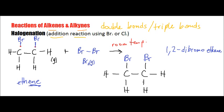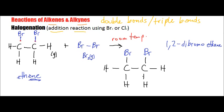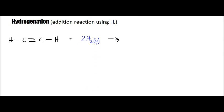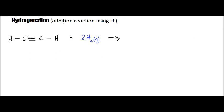Looking at a different type of reaction with alkenes and alkynes: what we call a hydrogenation reaction. In hydrogenation, we are introducing hydrogen gas to the structure. This is an addition reaction, so we're going to be adding two moles of hydrogen gas. There's the triple bond — that is typically where this reaction is going to take place.